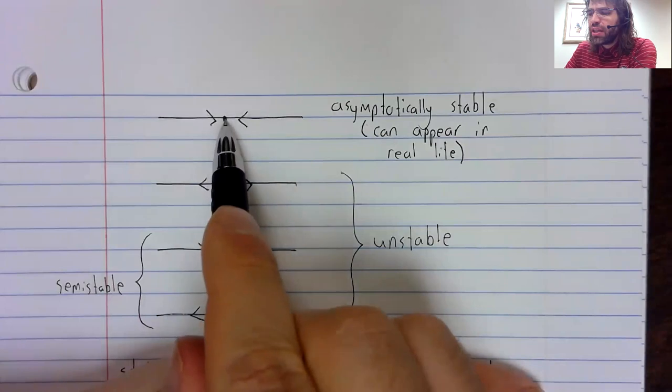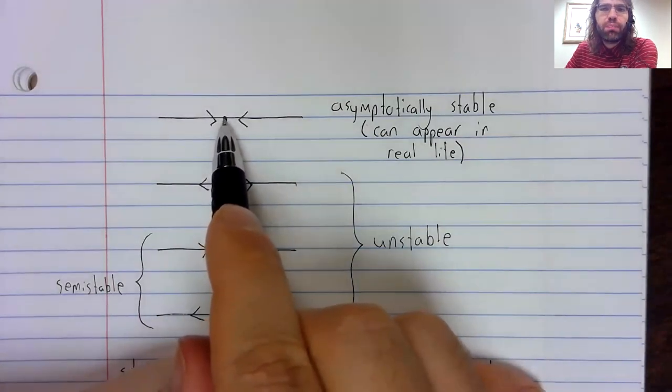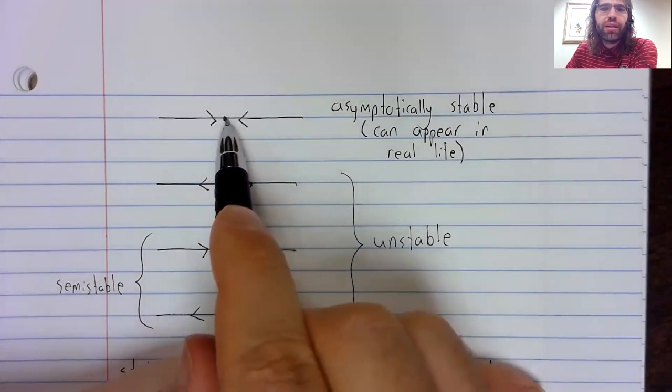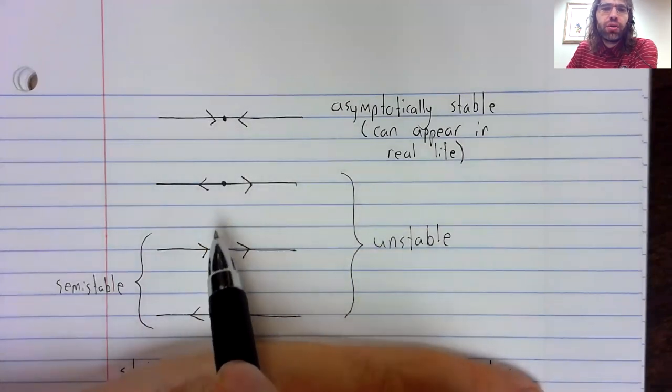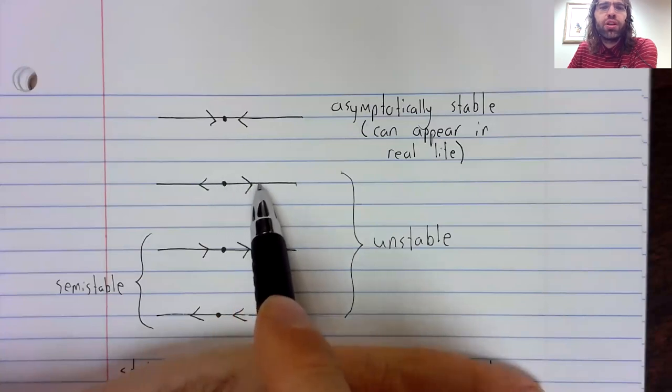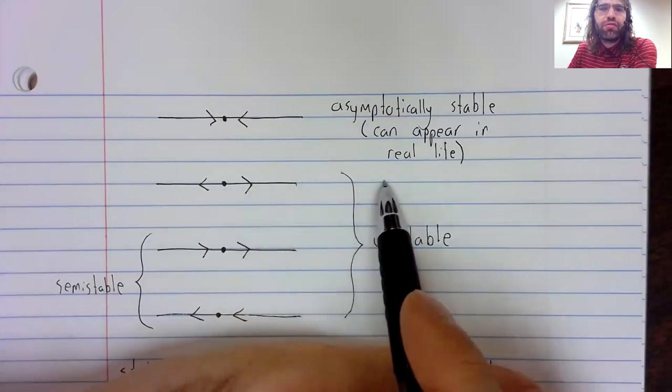With an asymptotically stable fixed point, if some random perturbation knocks you off of it, you go back to it. Here, once a random perturbation has knocked you off the fixed point, you go away from it.